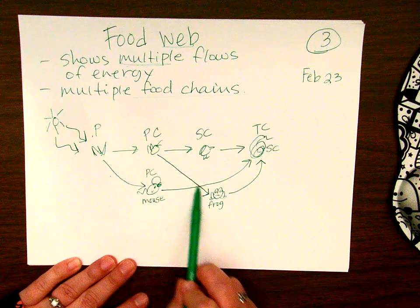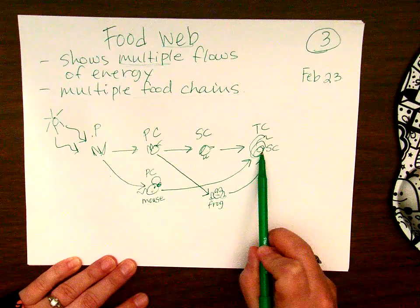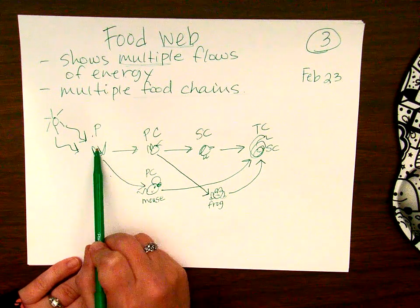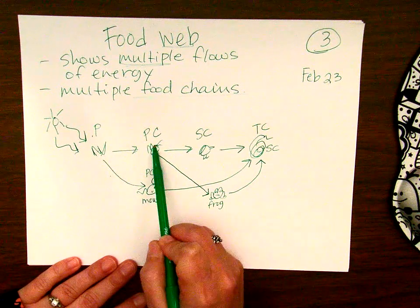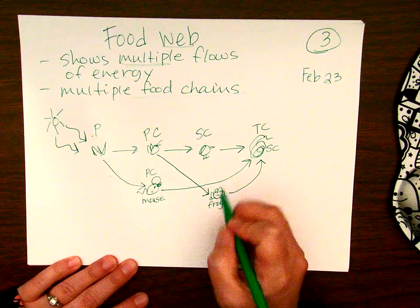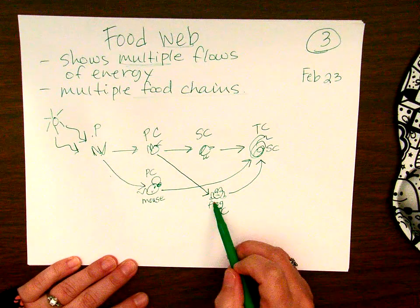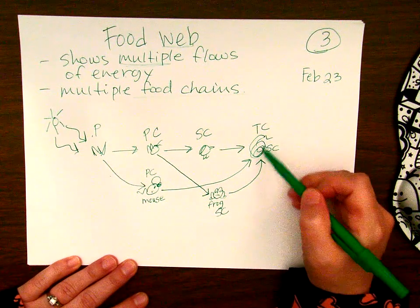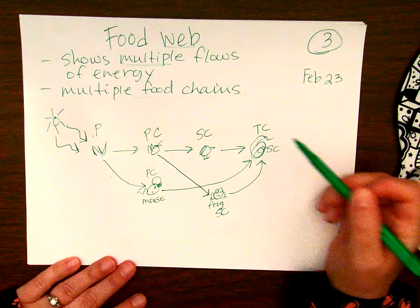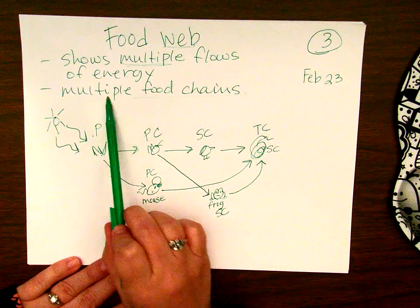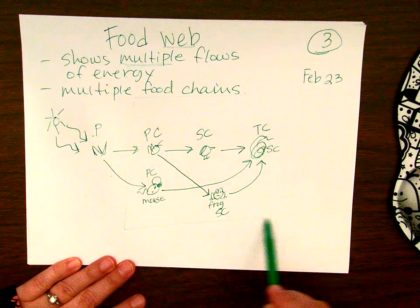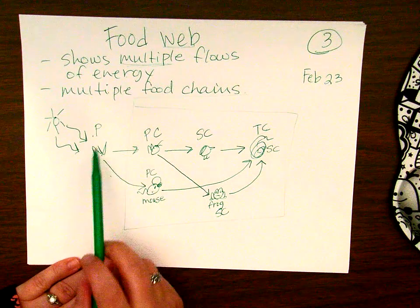This is another food chain. All food chains start with a producer. Then there's a primary consumer — the grasshopper. The frog is a secondary consumer, and the snake eats the frog, making the snake a tertiary consumer in this case. When we put all these chains together, this is a food web — multiple food chains. All of these organisms are consumers, and the grass is the producer.